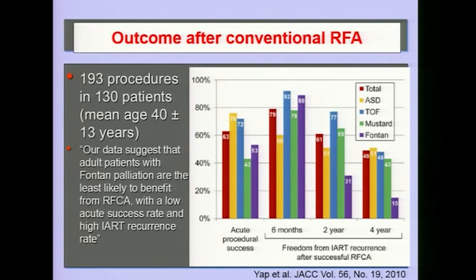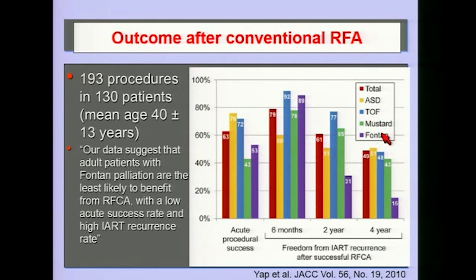Conventional ablation in congenital heart disease is actually not that successful. Using this cohort where colleagues used manual ablation with 3D mapping — state-of-the-art — you see different types of congenital heart disease: ASD, which is probably the simplest; Mustard; Senning; and the univentricular patients with Fontan palliations. Highlighting the Mustard and Fontan results, acute success is not so bad, about 50%, and there's a honeymoon period, but over time at four years follow-up it's only 15% for Fontans. That's not a great success rate, and these are young patients.